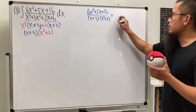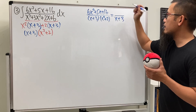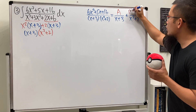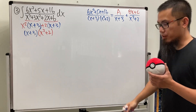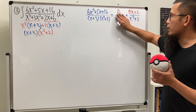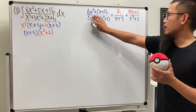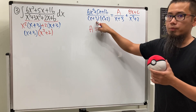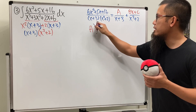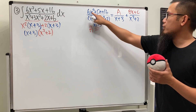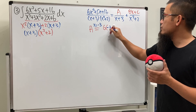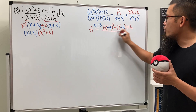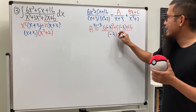We set up partial fractions for (6x squared plus 5x plus 16) over (x plus 3)(x squared plus 2). For (x plus 3) we put constant A on top; for (x squared plus 2) we put linear term Bx plus C. Using the cover-up method for A, we set x plus 3 equal to zero so x equals negative 3, then evaluate 6(−3)² plus 5(−3) plus 16, over (−3)² plus 2.